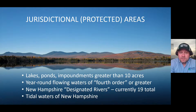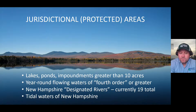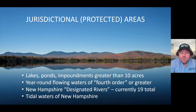These are the jurisdictional areas or protection areas associated with shoreland in New Hampshire. It starts with lakes, ponds, or impoundments greater than 10 acres. It also includes year-round flowing waters of what we call fourth-order streams or greater. It also includes our state's designated rivers — currently there are 19 of them — and last, it includes the tidal waters of New Hampshire.